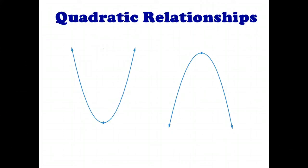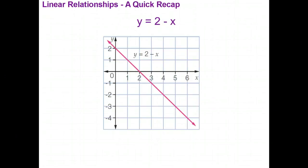Now in year 8 you studied another type of relationship called a linear relationship. So let's have a quick recap of what that was all about. So a linear relationship is given by a rule that connects two variables, x and y. So for example, the rule could be y equals 2 subtract x.